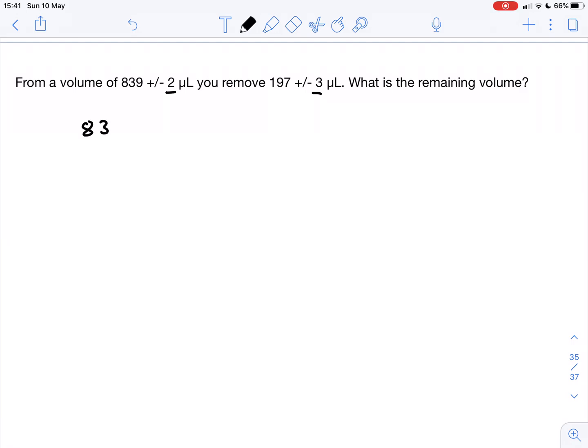So we have got 839 minus 197 microliters. This gives us 642 microliters. So that's the difference. But what are we going to do with the uncertainties?